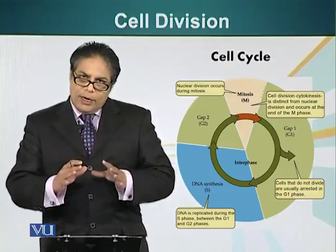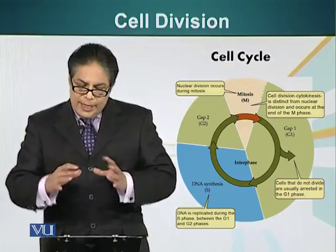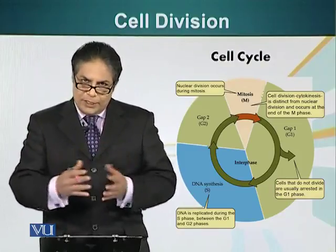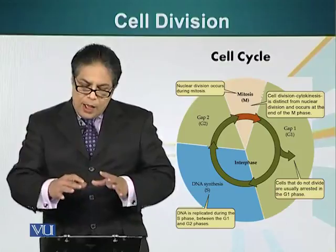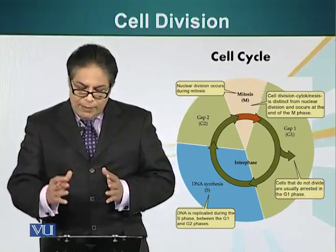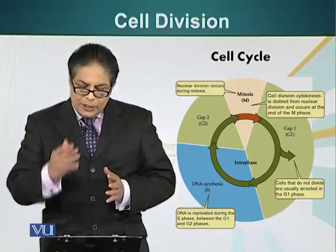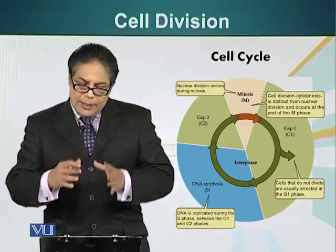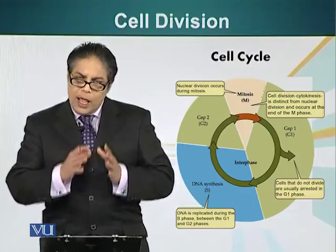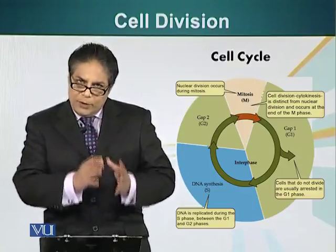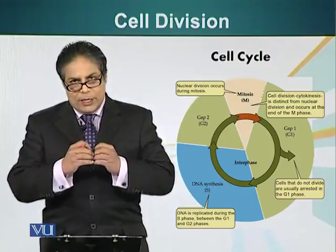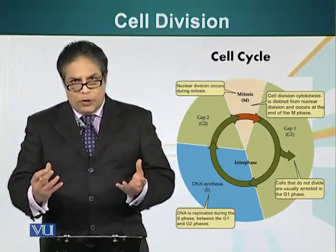In higher organisms, the cell cycle is divided into interphase and mitosis, or M phase. The interphase has three different sub-phases: G1, S, and G2. The M phase also has two components — mitosis itself and cytokinesis, in which a cell splits into two daughter cells.